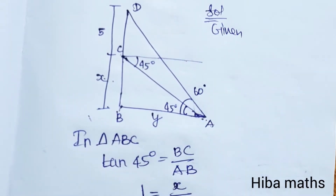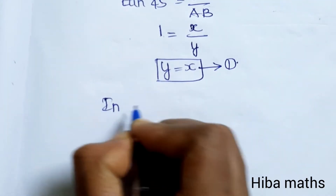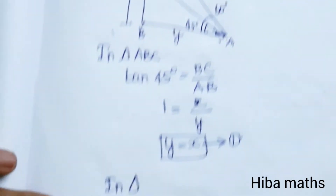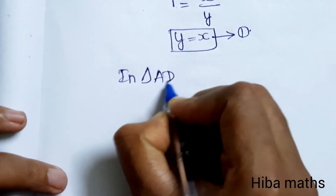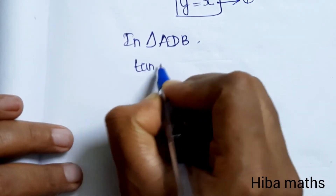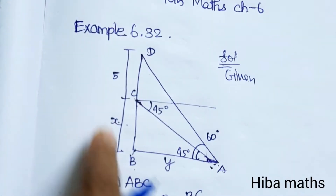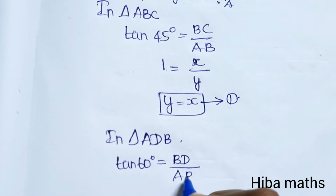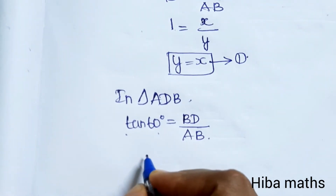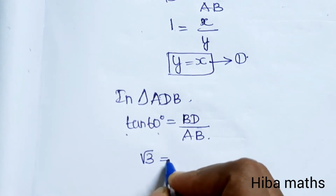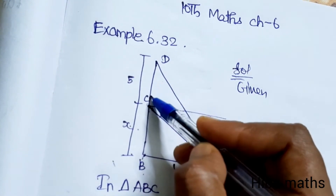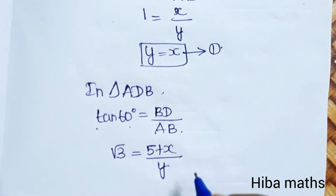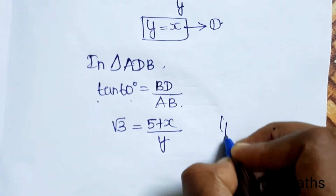In triangle ADB, tan 60 degrees equals the opposite side BD divided by AB. Tan 60 degrees equals root 3. BD equals CD plus CB, which is 5 plus x, and AB equals y.